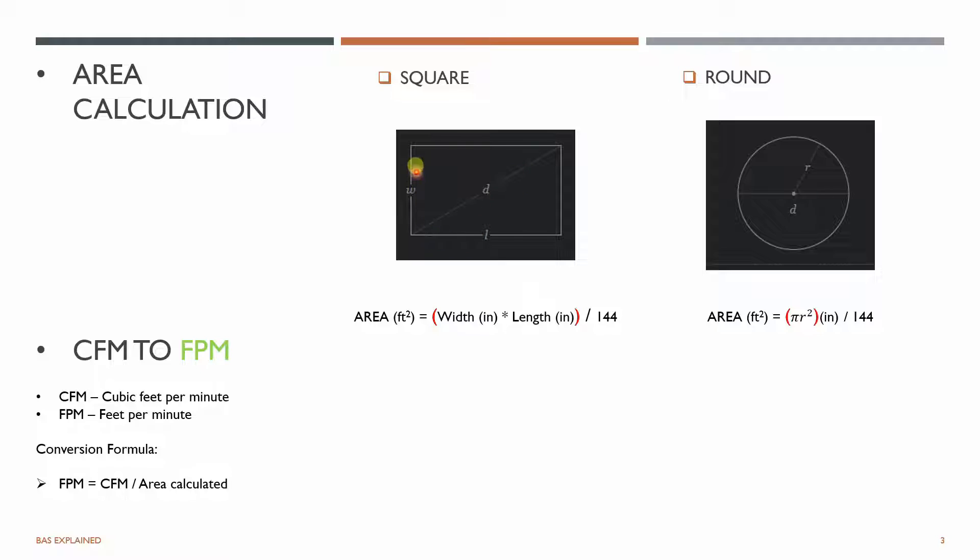The areas are calculated for squares which is with a multiplication of your width and length. All the dimensions given in the drawings will in most cases be in inches, that's the standard of the imperial. All the inches will be calculated or converted to feet by dividing by 144.